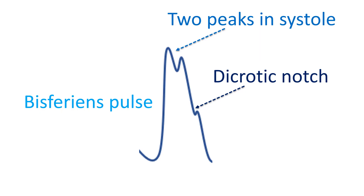Bisferiens pulse is more suggestive of free aortic regurgitation than a combination of aortic stenosis and regurgitation. The bisferiens pulse has two peaks in each systole.